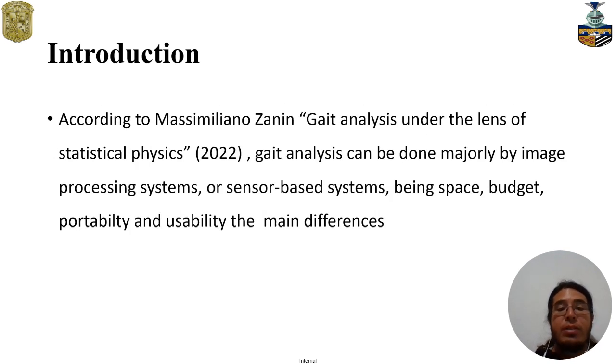According to Massimiliano Sanin in his 2022 work called Gait Analysis under the lens of statistical physics, there are two major different types of gait analysis: image processing system and sensor-based system, with space, budget, portability, and usability being the main differences between these two systems.